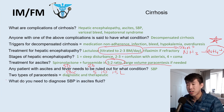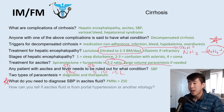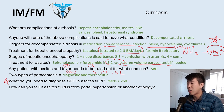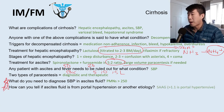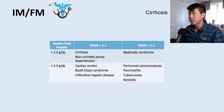Diagnostic criteria for SBP in ascitic fluid: PMNs or neutrophils greater than 250 — if you see that, you can diagnose SBP. To determine if ascites is from portal hypertension versus another etiology, use the SAAG — serum ascites albumin gradient: compare serum albumin to ascites albumin. A gap greater than 1.1 indicates portal hypertensive etiology (cirrhosis). A SAAG less than 1.1 suggests nephrotic syndrome, malignancy, pancreatitis, or tuberculosis.